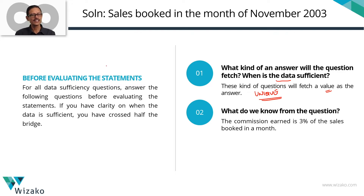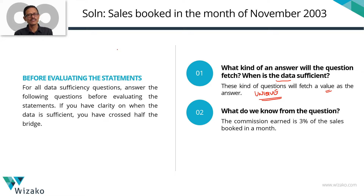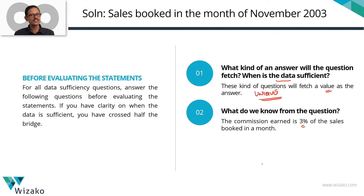What do we mean by answer is not unique? If I get two values — for example, the sales could be 500,000 or 200,000 — then the data is not sufficient. Or, if I don't have information at all to find out even a single value, then the data is not sufficient. The key data we know from the question stem is that this person earns a commission of 3% of the sales each month.